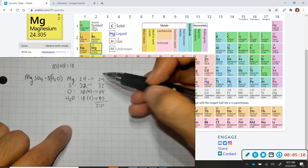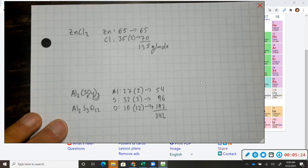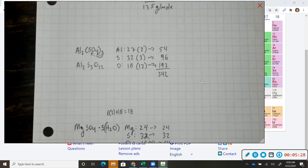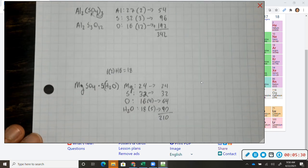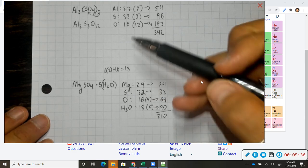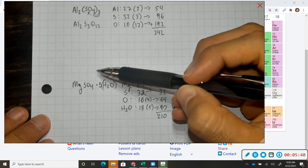So here it is again for zinc chloride, aluminum sulfate, and magnesium sulfate pentahydrate. In the next video, we'll go ahead and calculate the percent composition of each element and the amount of water inside of this hydrate.